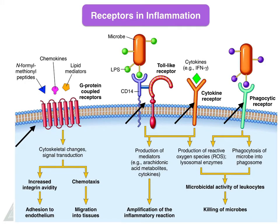The receptors involved in inflammation are glycoprotein G protein-coupled receptors, toll-like receptors, cytokine receptors, and phagocytic receptors, which transmit signals to the cell and lead to the cellular events.